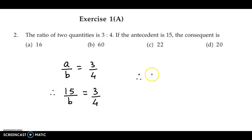Now if we cross multiply, we obtain the value of B as 15 into 4 divided by 3. So we have 3 ones are 3, 3 fives are 15. So 5 fours are 20. So the required value is 20, and the correct answer is option D.